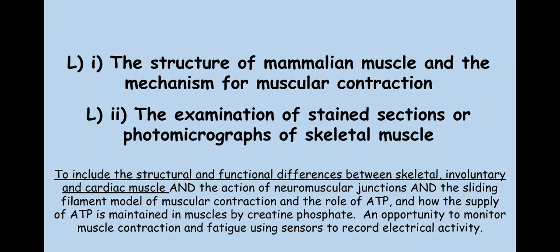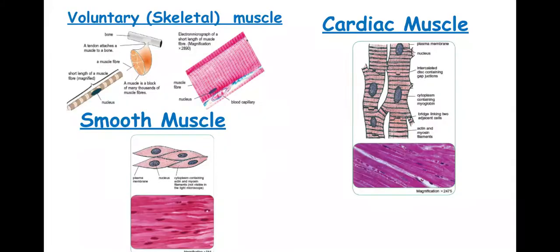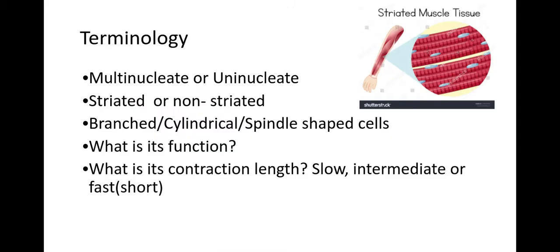Welcome biologists. In this session we're going to take a look at the structural and functional differences between skeletal, involuntary, and cardiac muscle. Here are the three different types of muscle you need to know — similarities and differences between all three, but also how to identify them from a microscope image.